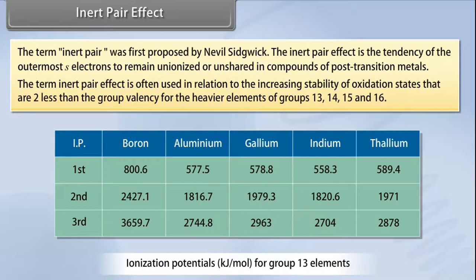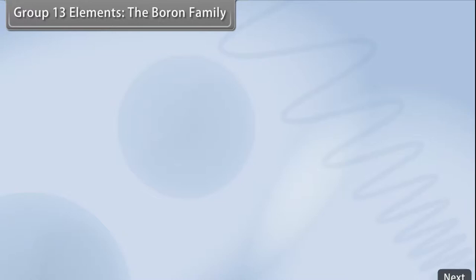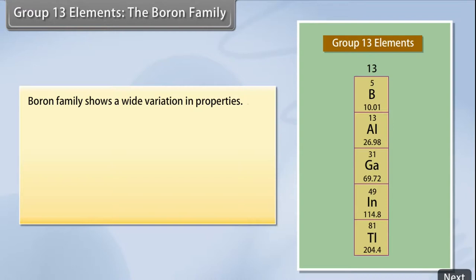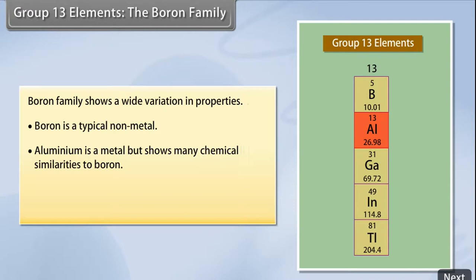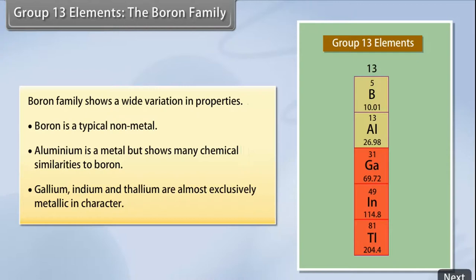This applies to the heavier elements of groups 13, 14, 15, and 16. Group 13 elements — the boron family — show a wide variation in properties. Boron is a typical non-metal, aluminium is a metal but shows many chemical similarities to boron, while gallium, indium, and thallium are almost exclusively metallic in character.